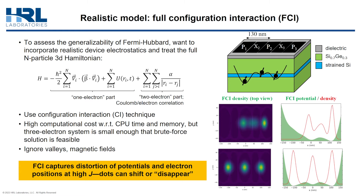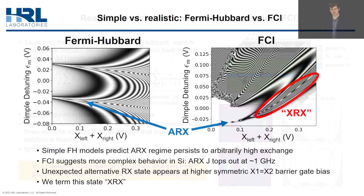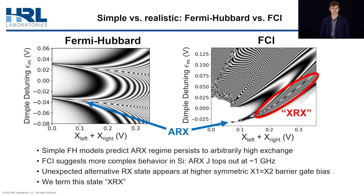We're also ignoring the silicon valley degree of freedom, magnetic fields, and spin-orbit effects. So despite this laundry list of compromises, FCI still captures way more of the physics than Fermi-Hubbard. A good way to see that is through a direct comparison between the two, with Fermi-Hubbard on the left and FCI on the right.